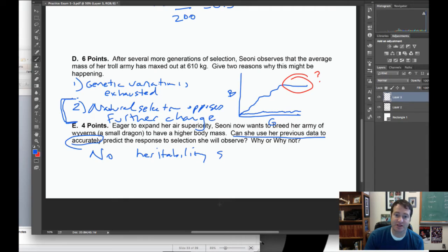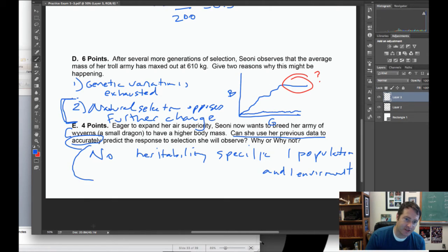Because heritability is an estimate that's specific to one population and one environment. These wyverns are a different species, let alone a different population, and so there's no reason to assume that the heritability for body size variation in wyverns is 0.3 like it is in her population of trolls. This is an applied version of limitations of heritability, but there are other limitations in your notes that are dealt with in other sections of the exam.